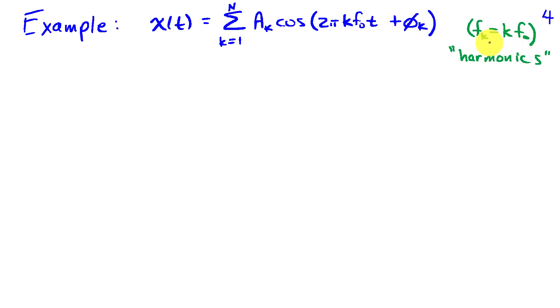f k would be the kth harmonic of f naught. So the second harmonic is 2 f naught, the third harmonic is 3 f naught, and so on.